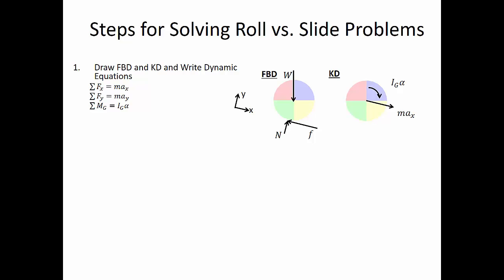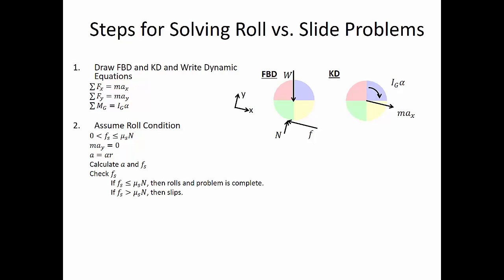Sum of the forces in the x equals mass times acceleration in x. Sum of the forces in the y equals mass times acceleration in y. And the sum of the moments about the center of gravity equals the mass moment of inertia times the angular acceleration. The next thing we need to do is make an assumption — we're going to assume that we have the roll condition. In this case, we're assuming that our friction force is going to be somewhere between zero and the maximum static friction, and that mass times acceleration in the y direction is zero. With this assumption, we can say that the acceleration of the center of gravity equals angular acceleration times the radius of the rolling object. Next, we would calculate what our acceleration and friction are.